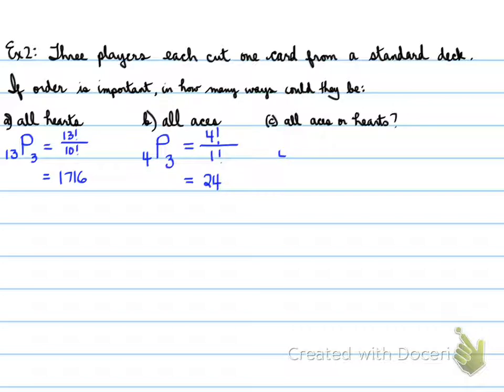Now, all aces or hearts. This one's tricky because you could have an ace and a heart. We have to include 4 choose 3, that's all aces, plus 13 choose 3 for hearts. And we have to subtract the one that's common. How many are common? That's right, one card that is common in both aces and hearts. If you really wanted to call it, it would be 1 choose 1. The answer to this is 1,739 possible ways we could have all aces or hearts.